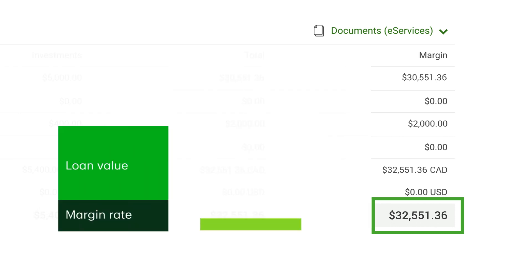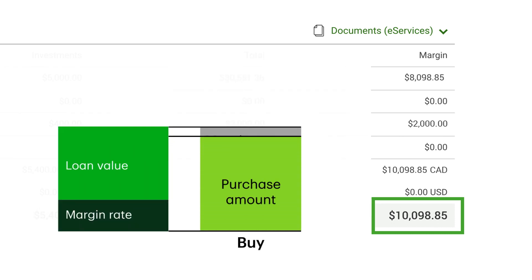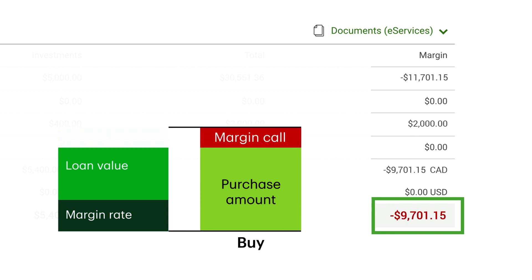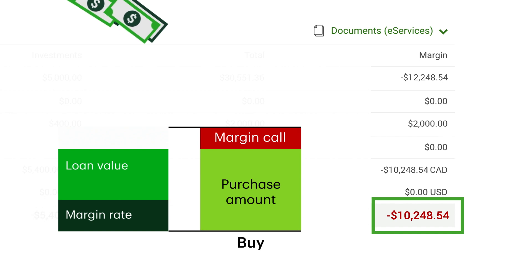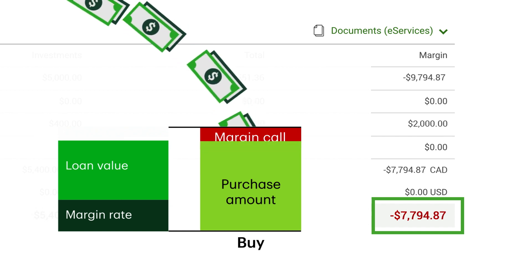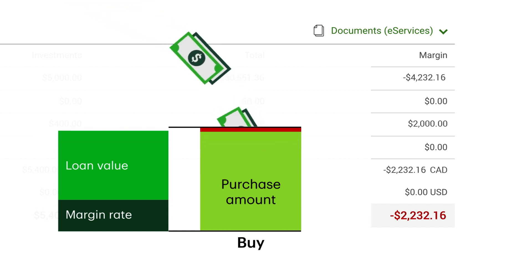A positive number means you have excess margin that you can use to trade or withdraw funds. A negative number means you're in a margin call — you're in a deficit and you need to deposit funds or sell investments immediately to bring your margin into good standing.